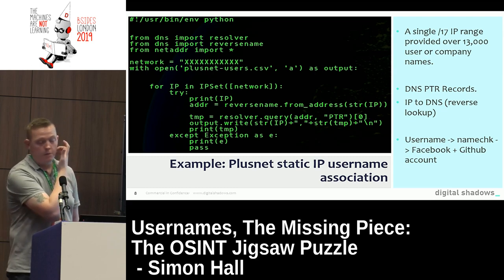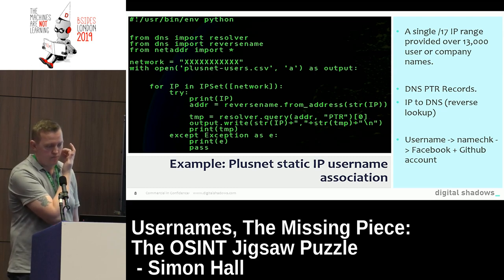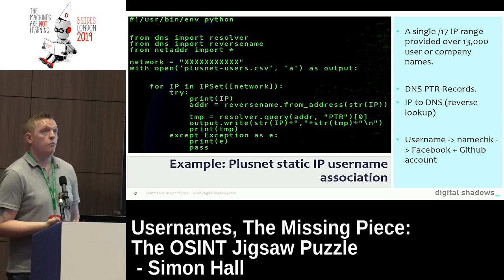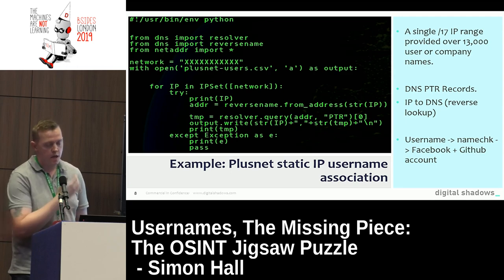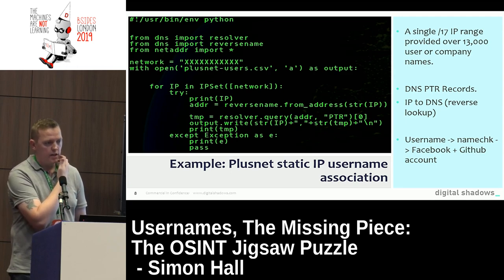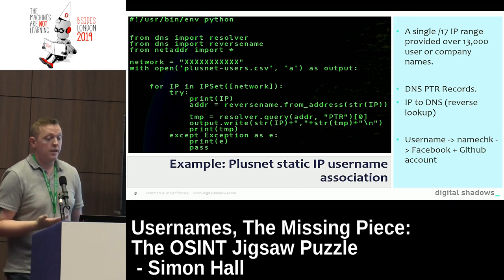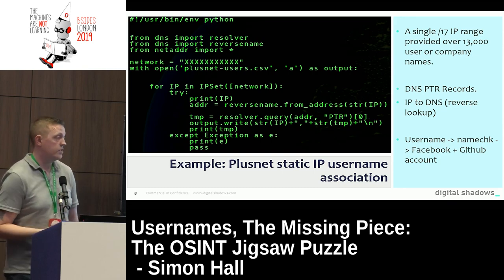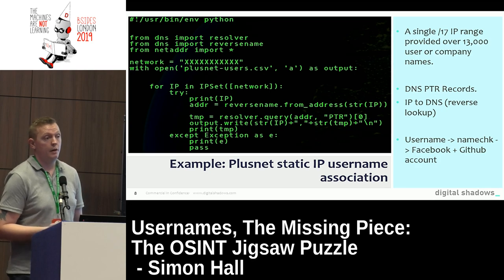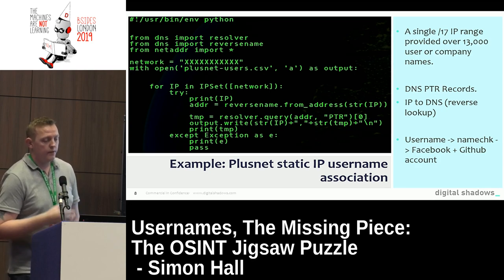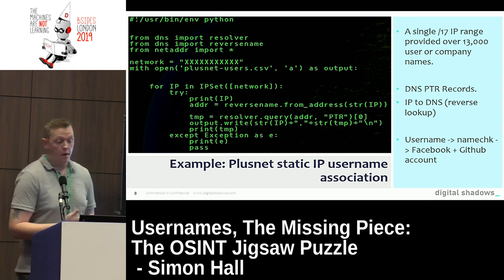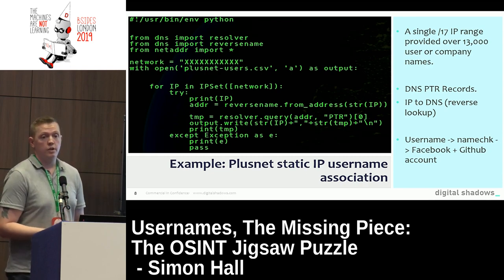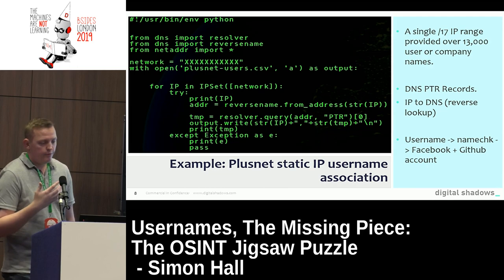One of the key examples I love when it comes to username disclosure is Plusnet. It's a pretty good ISP, and one of the only handful in the UK that will give you a static IP address as a domestic customer. One lesser-known thing is that if you have a static IP address with Plusnet, they associate your account username with your IP address. Someone can do a reverse lookup of the PTR records for that IP and gain your username really easily.